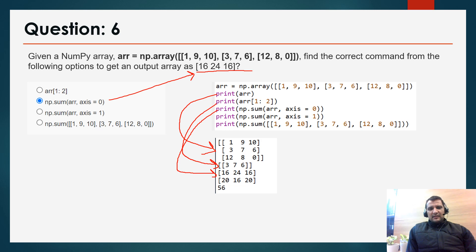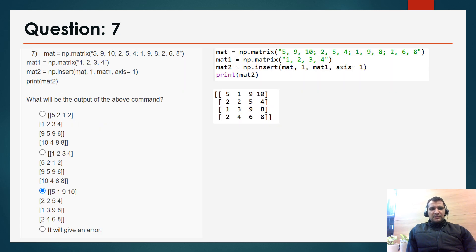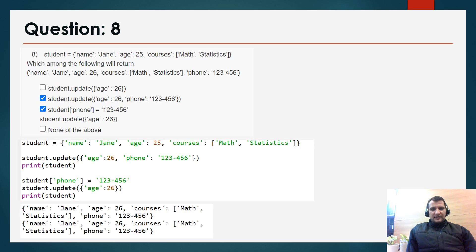Question 7: matrix is equal to this one, mat1 this one, mat2 this one — print mat2. What will be the output of the above command? When I executed all these commands, the correct answer is option c: [[5, 19, 10], [22, 54, 13], [98, 24, 68]].